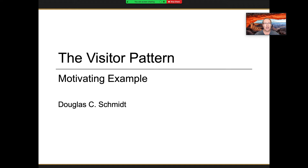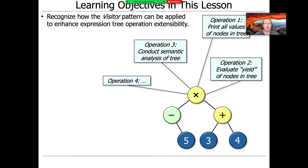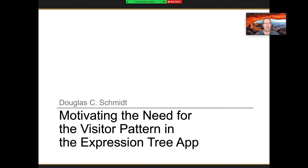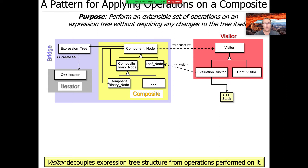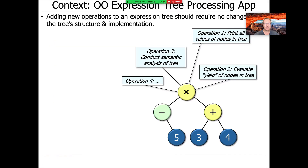We're now ready to turn our attention to one of the most complex patterns in the Gang of Four book: the Visitor pattern. We'll start by explaining how the visitor pattern is applied in our expression tree processing case study, in order to enhance the extensibility of operations. We can add new types of operations to our expression tree processing without changing anything in our structure or existing implementation.